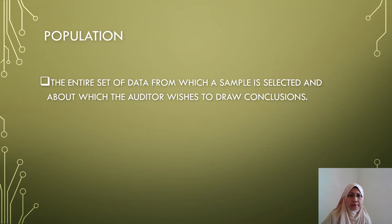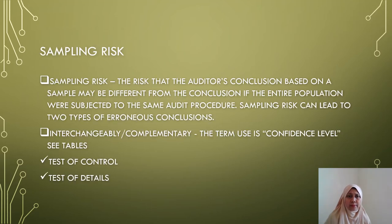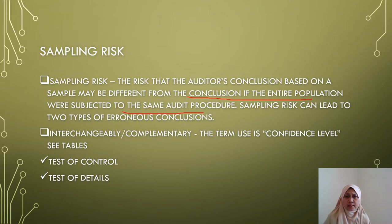Population refers to the entire set of data from which a sample is selected and about which the auditor wishes to draw conclusions. Sampling risk is the risk that the auditor's conclusion based on a sample may be different from the conclusion if the entire population were subjected to the same audit procedure. Sampling risk can lead to two types of erroneous conclusion.